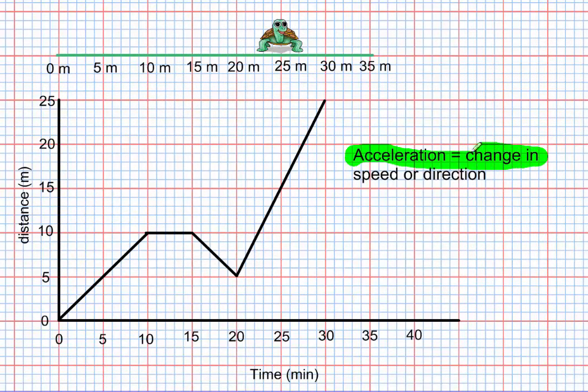So if we remember, acceleration is a change in speed or direction. So when do we have acceleration for our turtle? Well, everywhere along this line, everywhere the line is straight, means the speed is constant. So where do we have a change in speed or a change in direction?